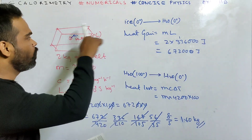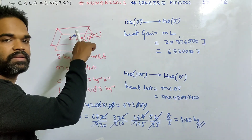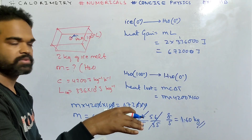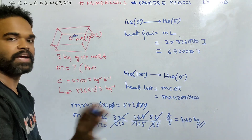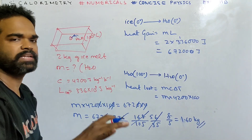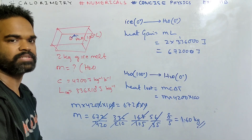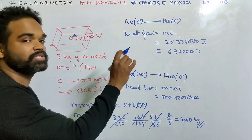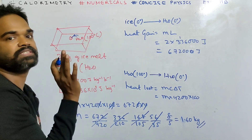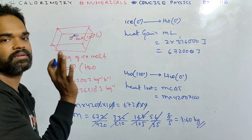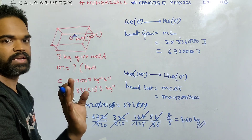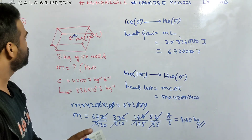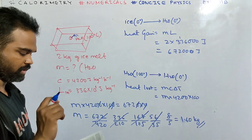So 1.6 kg of water at 100 degrees was poured into that hole, causing 2 kg of ice to melt. Heat loss equals heat gain. The key point was that the final temperature is 0 degrees centigrade.